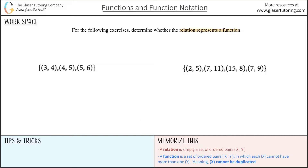Now let's look at the definition of a function. A function is a set of ordered pairs (x, y) — basically a relation, but with an extra condition: each x cannot have more than one y. So we're going to highlight the x values of our ordered pairs, and investigate whether those x values have been repeated or duplicated.